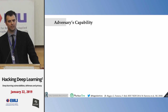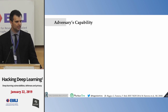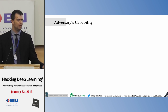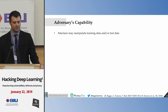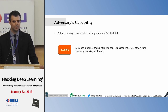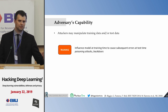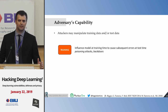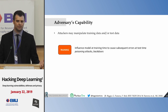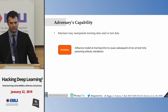Regarding the attacker's capability — what data they can manipulate — machine learning has two main phases: training and testing. The attacker may be able to tamper with training data, for example if the system is retrained online and a compromised machine injects malicious traffic into the training set. This leads to poisoning and backdoor attacks. Or the attacker can change test data after the system is deployed, for example modifying malware samples to evade an antivirus.